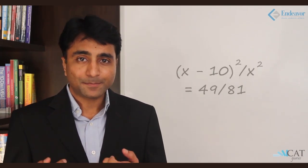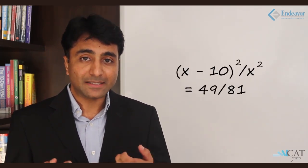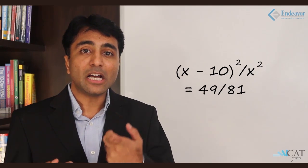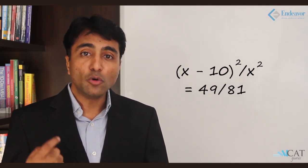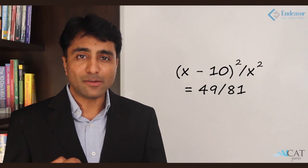This proportion of wine is equal to the ratio given to us, 49 to 32. Finding the proportion of wine, it will be 49 upon 81. So the equation looks like: (x minus 10) upon x, the whole squared, equals 49 upon 81. If you observe closely, both sides of the equation are perfect squares. Taking the square root of both sides, I get (x minus 10) upon x on the left-hand side and 7/9 on the right-hand side.